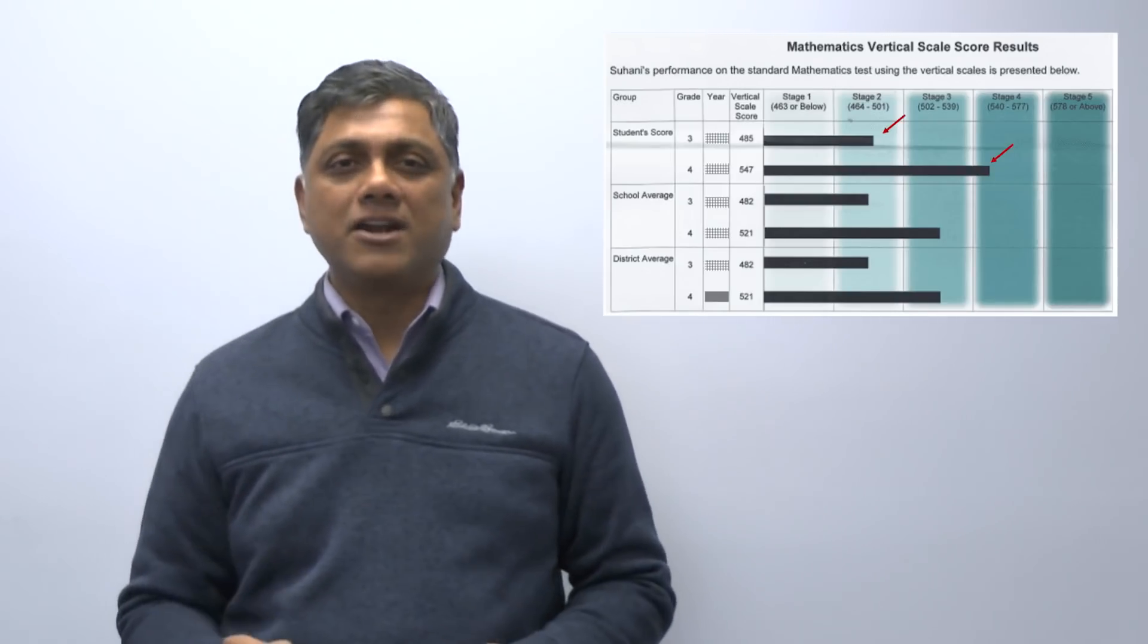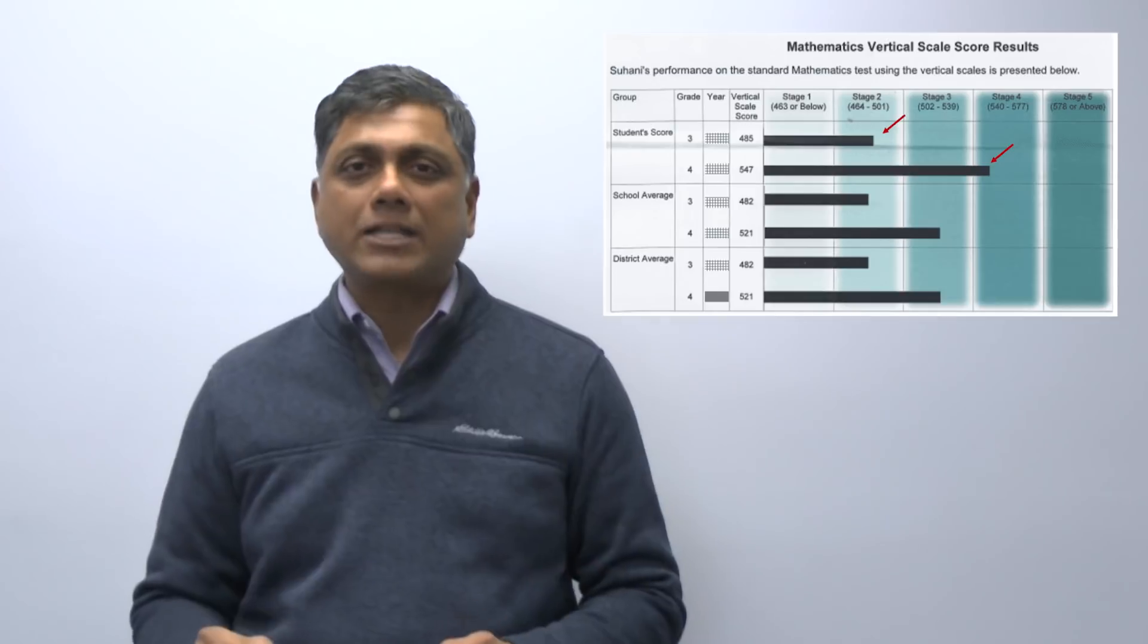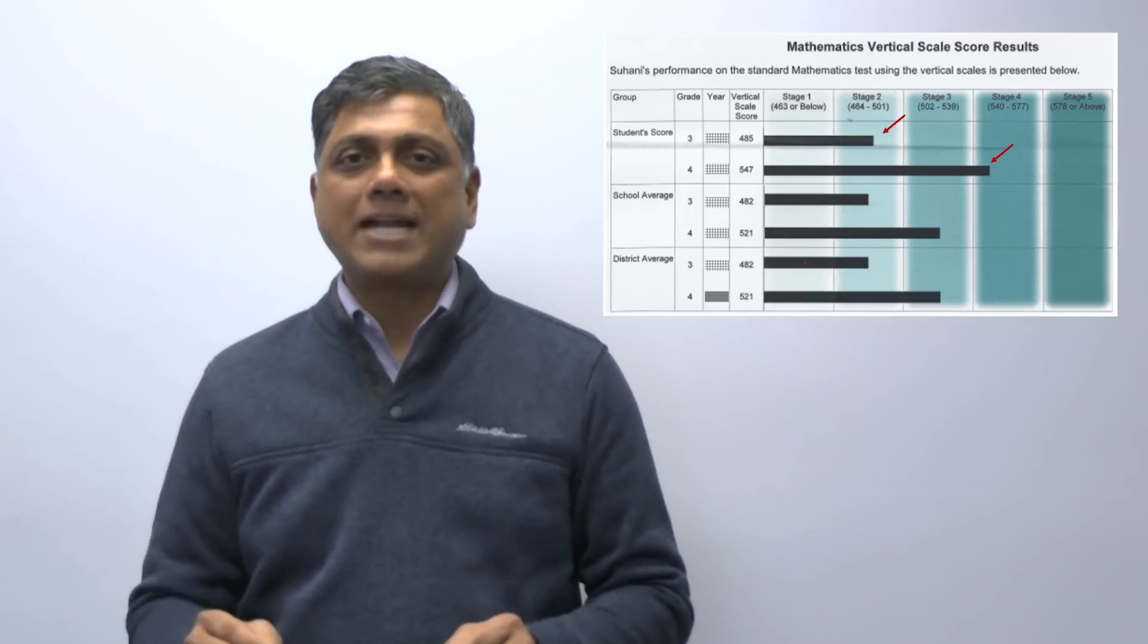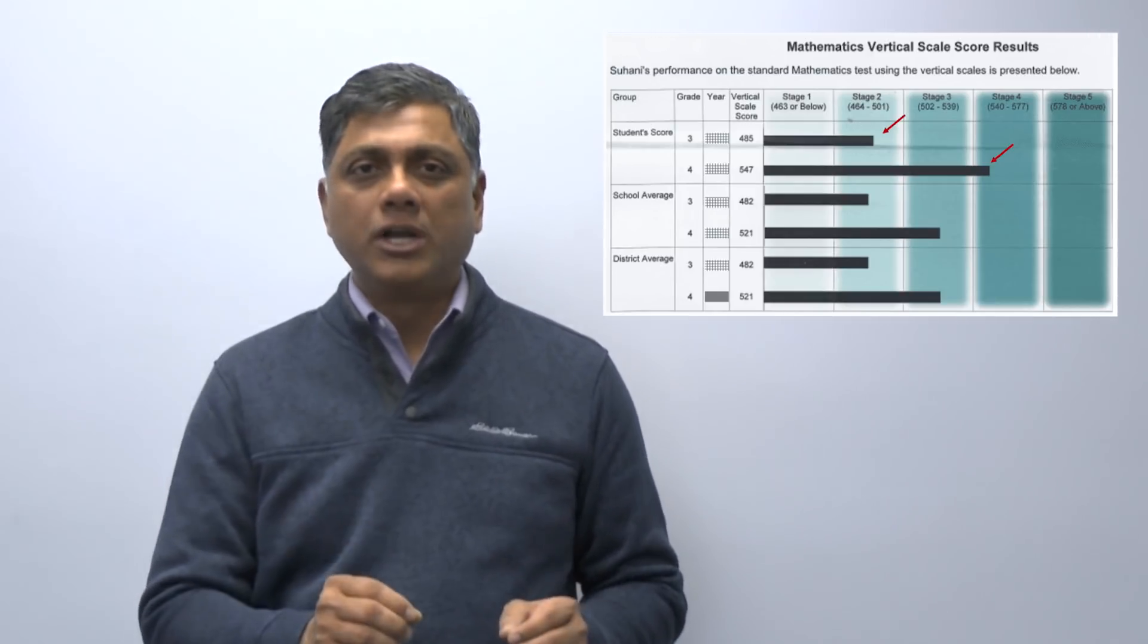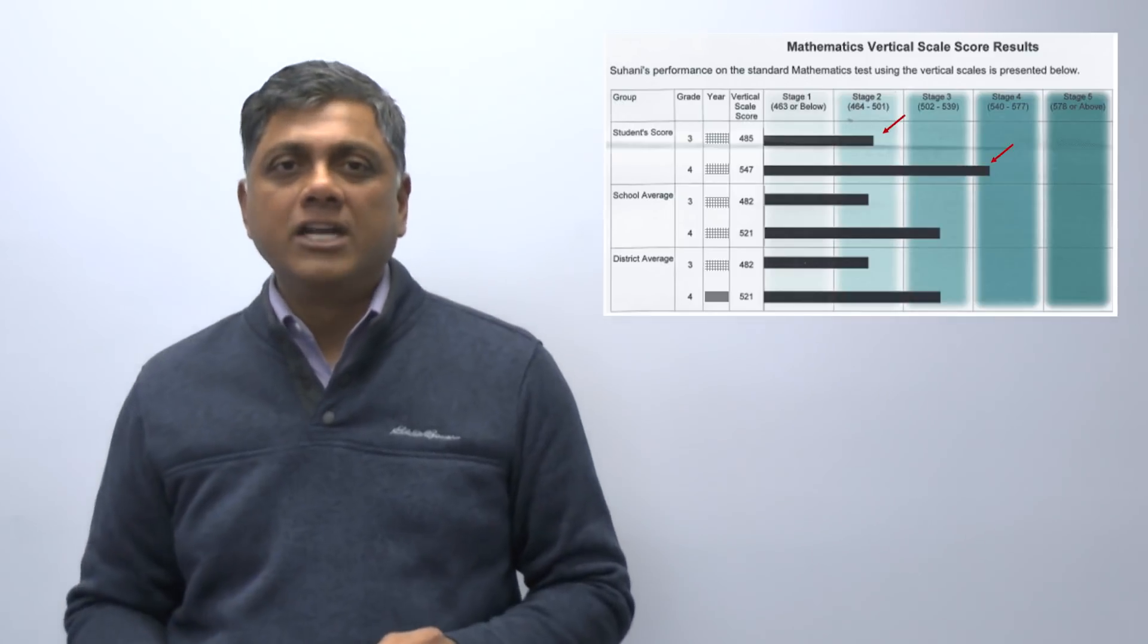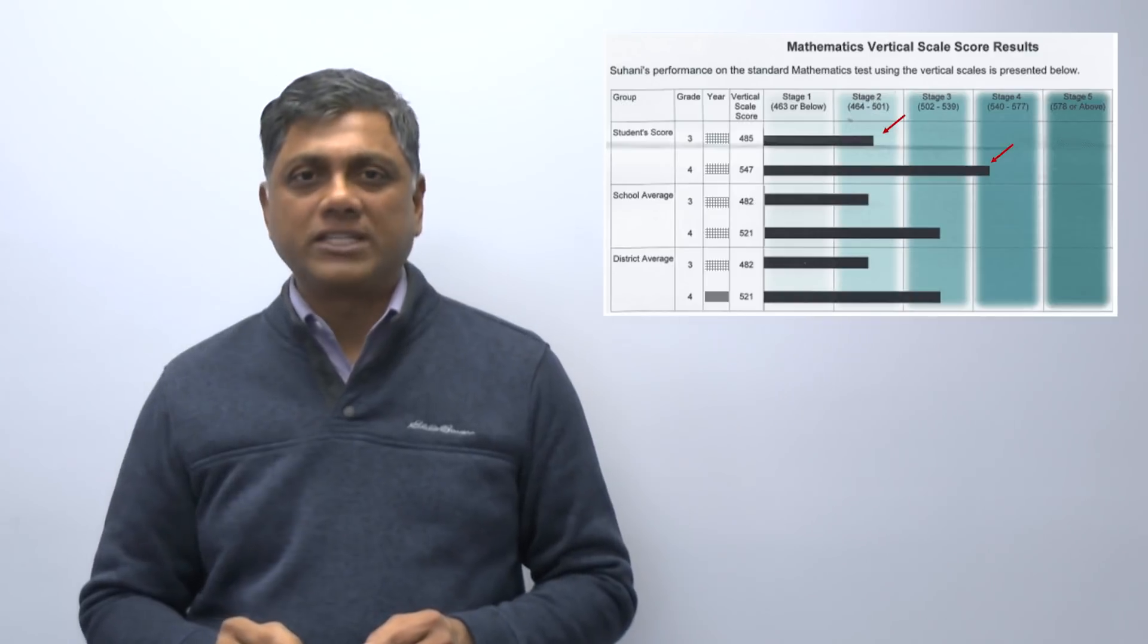Here's Suhani. In less than a year, she improved her performance on the math portion of the Connecticut Mastery Test from stage 2 with a score of 385 to stage 4 with a score of 547.